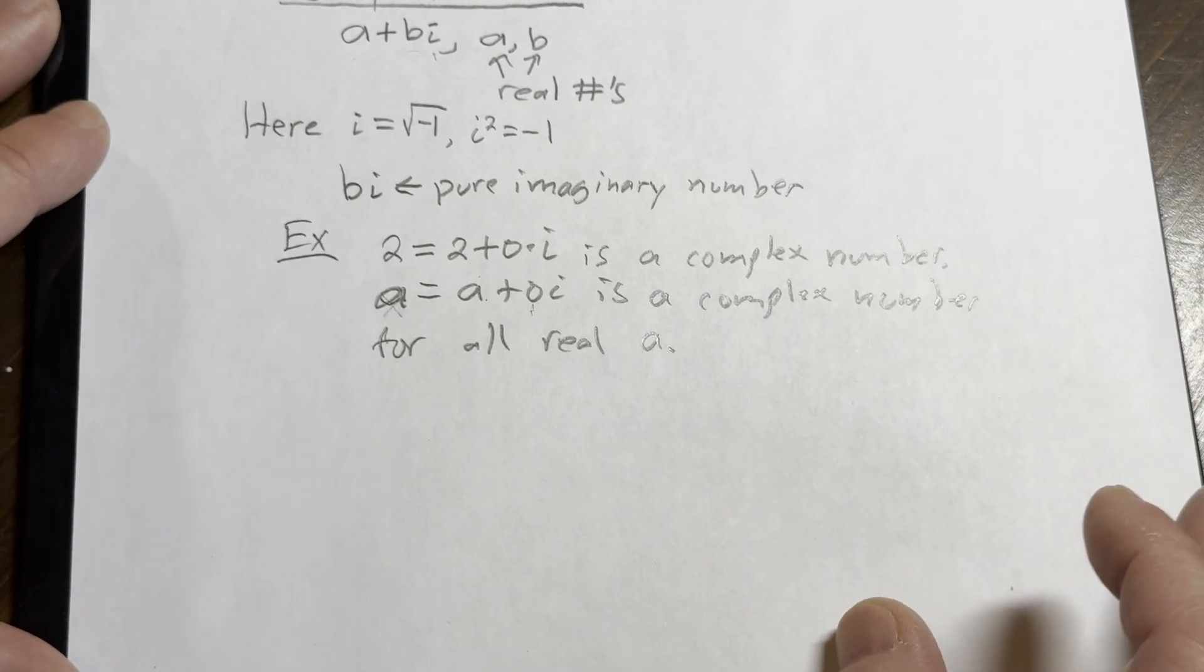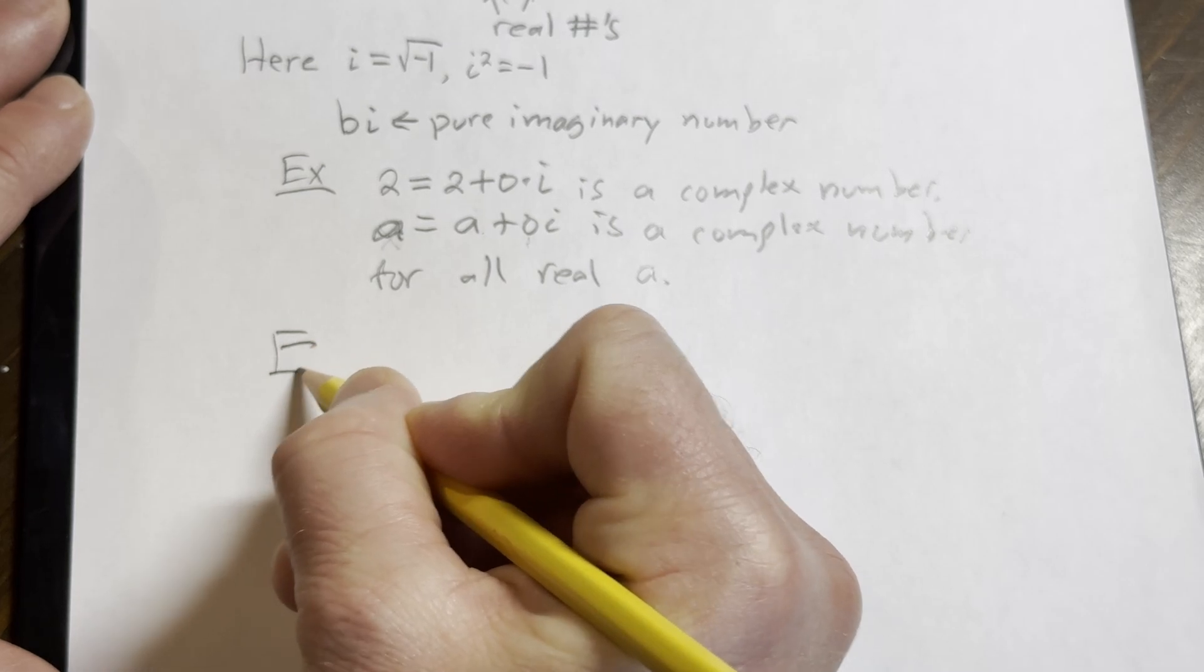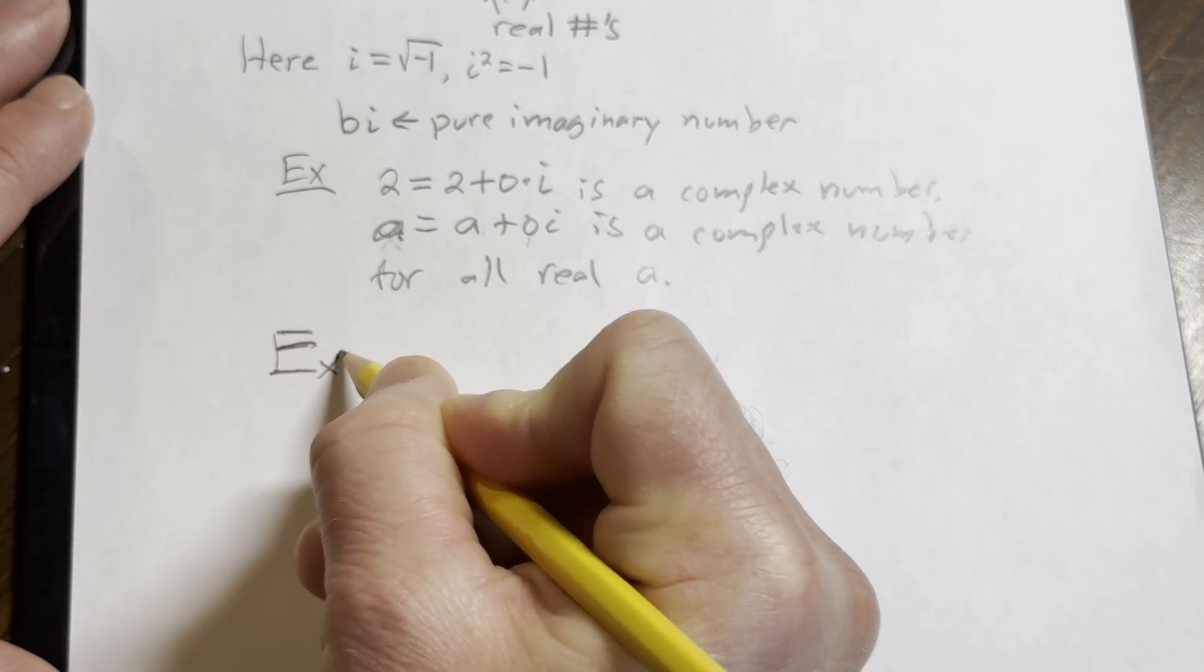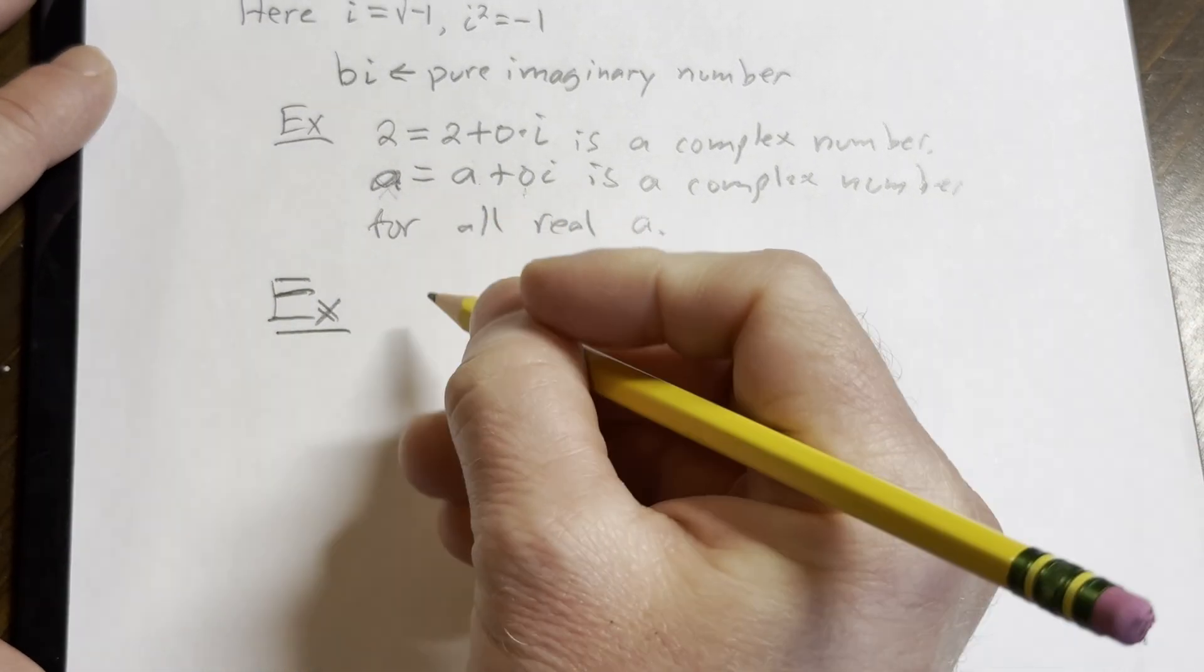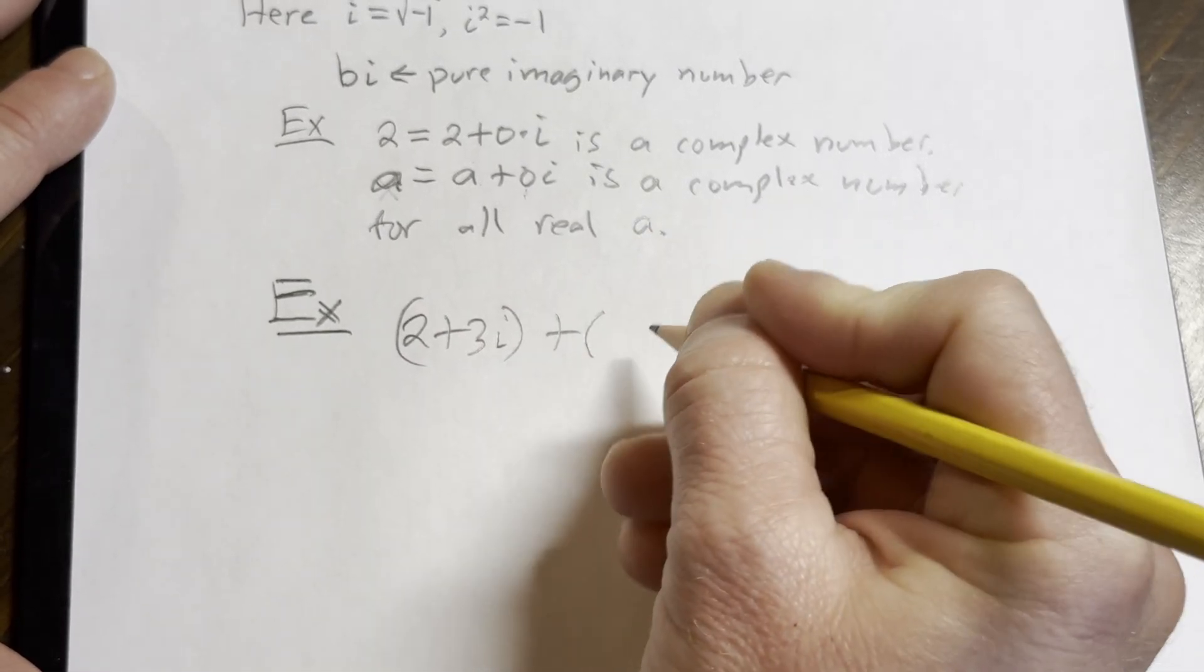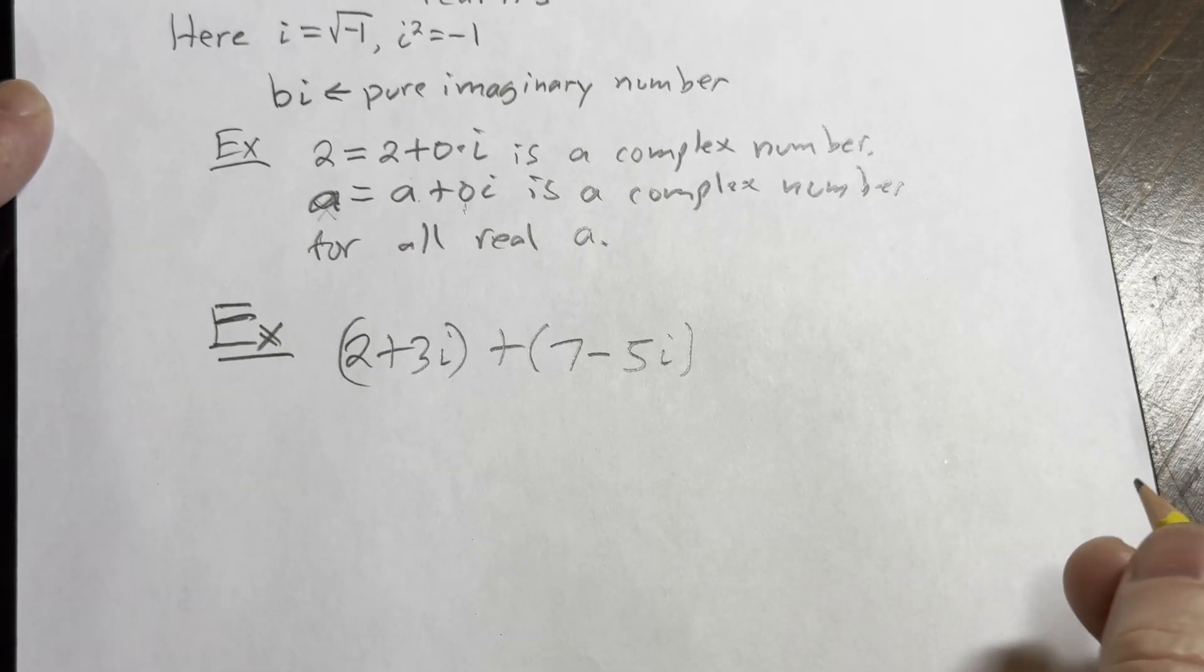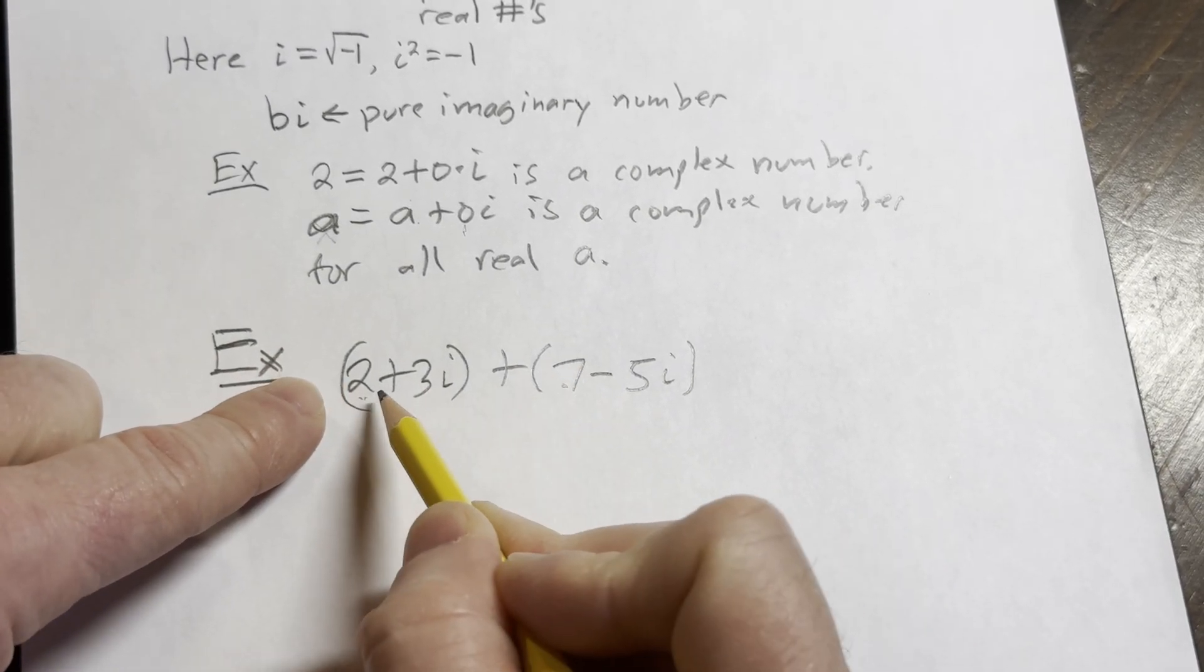Let's do an example of adding. So how do you add two complex numbers? Let's say we have the number 2 plus 3i plus 7 minus 5i. So to add these, you just basically add the real parts.